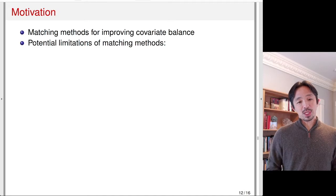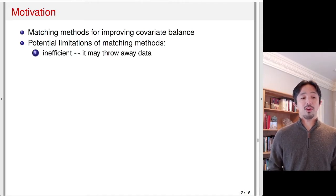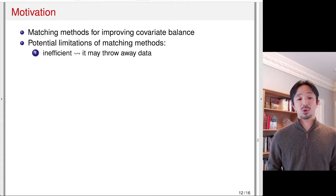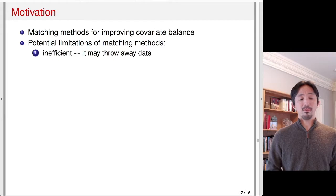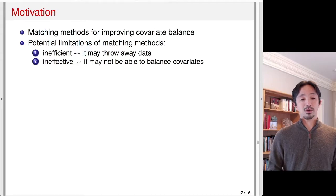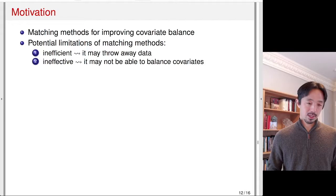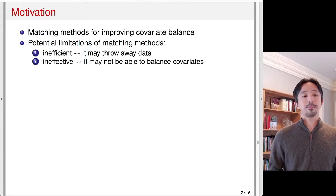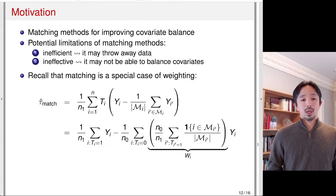Let's think about the potential limitations of matching methods. The first is that it could be very inefficient — it may throw away too many observations and end up reducing the sample size. It could also be ineffective: it may not be able to balance covariates, because with matching all you can do is either keep the observation or throw it away.